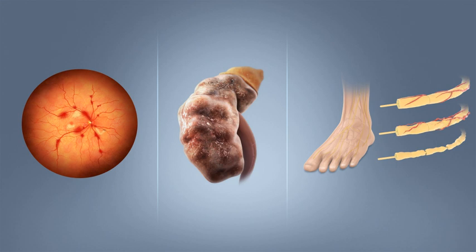Other complications include an impaired counter-regulatory response to low blood sugar, infection, gastroparesis which leads to erratic absorption of dietary carbohydrates, and endocrinopathies, e.g., Addison's disease. These phenomena are believed to occur no more frequently than in 1% to 2% of persons with type 1 diabetes. Type 1 diabetes is partly inherited, with multiple genes, including certain HLA genotypes, known to influence the risk of diabetes. In genetically susceptible people, the onset of diabetes can be triggered by one or more environmental factors, such as a viral infection or diet.